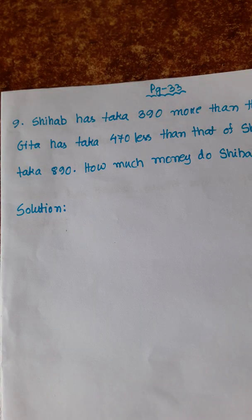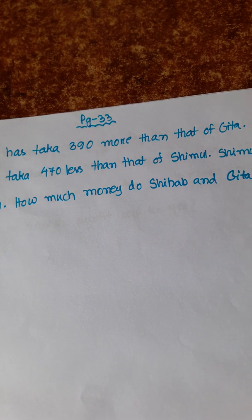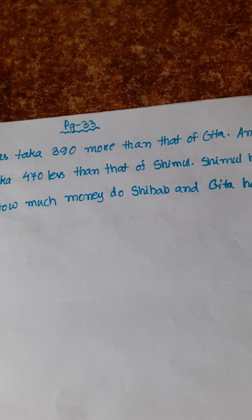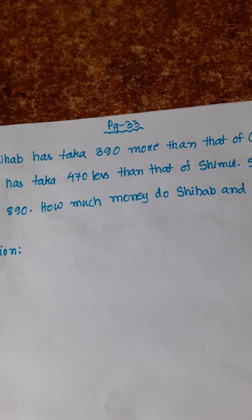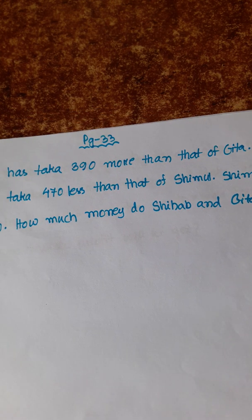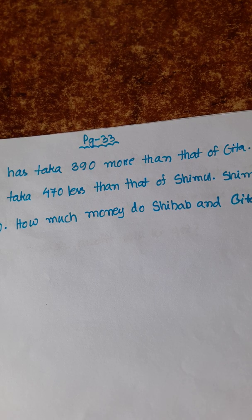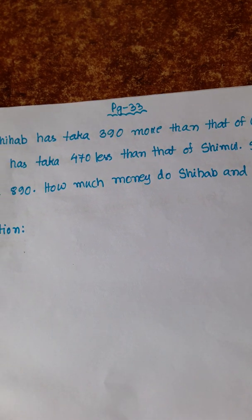Now the next problem, number 9. Shihab has 390 more taka than that of Gita, and Gita has 470 less taka than that of Shimul. Shimul has 890 taka. How much money do Shihab and Gita have?